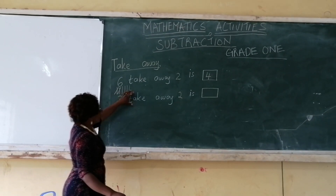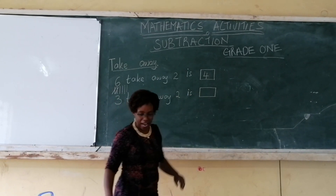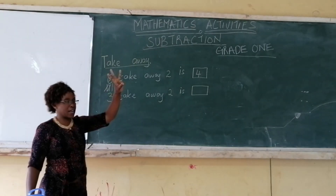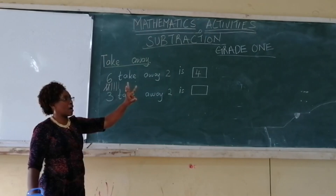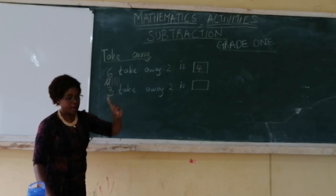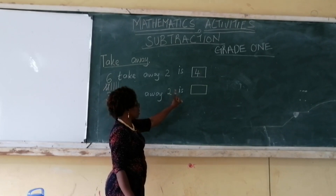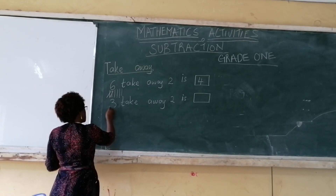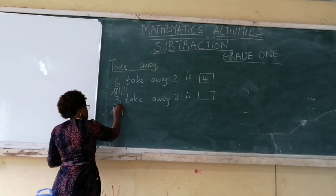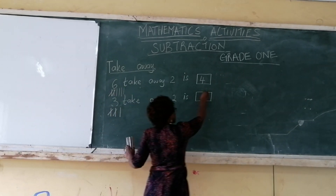Here we have: three take away two is — box or dash. So, I have three fingers. Take away two: one, two. How many are left standing? One. So, three take away two is one. I can count it: one, two, three — take away two: one, two — how many are left? One. So, our answer is one.